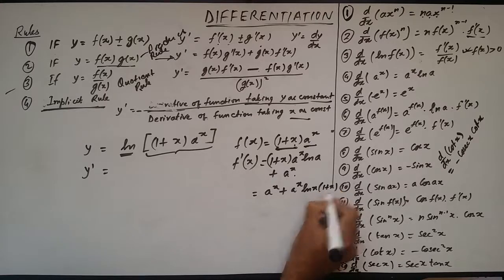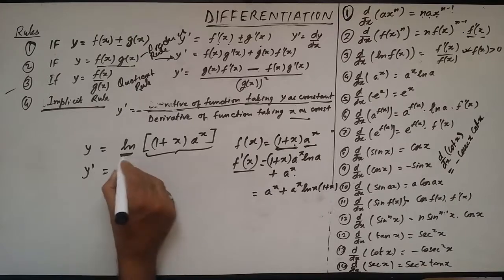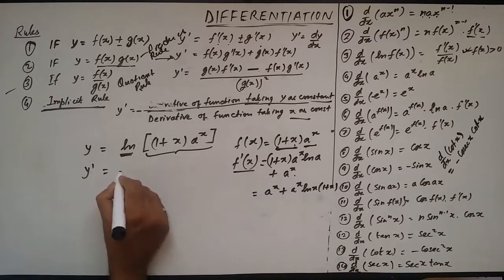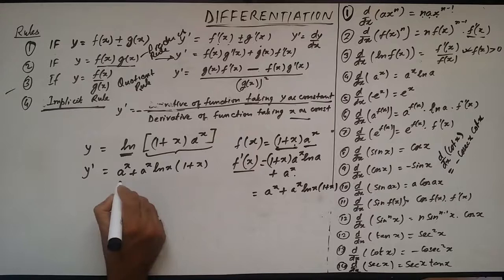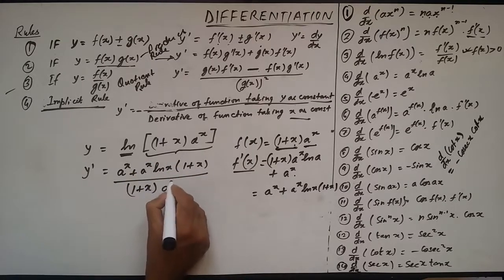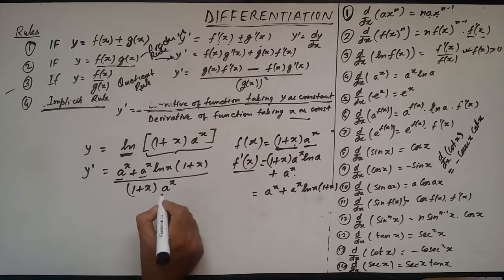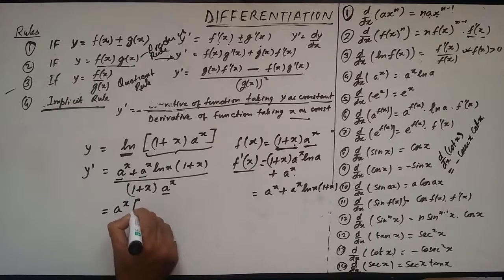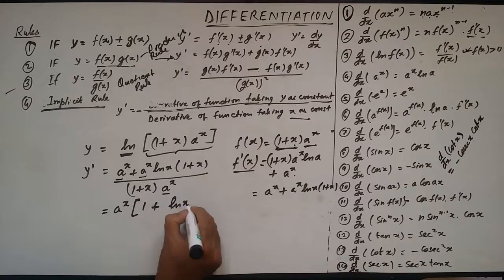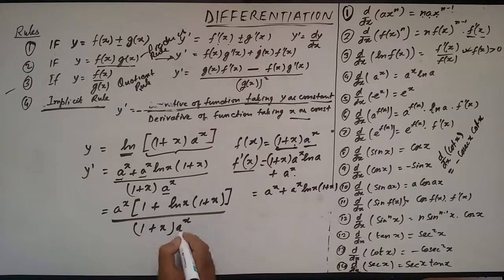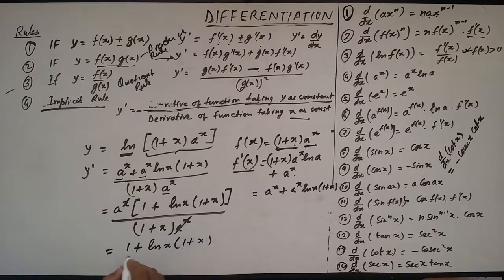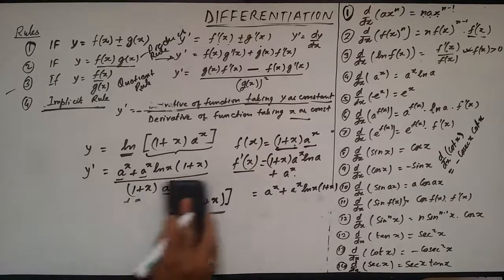So we now have the numerator as aˣ + aˣ · ln(a) · (1 + x), all upon the denominator (1 + x · aˣ). Since aˣ is common in the numerator, we take aˣ outside and are left with (1 + ln(a) · (1 + x)). The aˣ in numerator and denominator cancel, giving us (1 + ln(a) · (1 + x)) upon (1 + x · aˣ) / aˣ, which simplifies. Hope this example is clear.